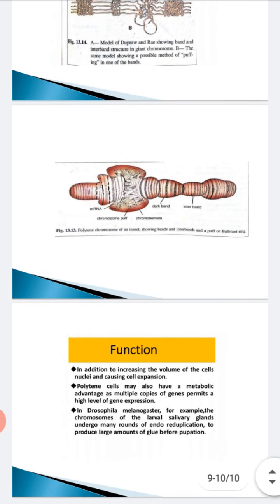What is its function? One is that it increases the volume of the cell and causes expansion of nuclei and cells. Second, polytene cells may also have a metabolic advantage as multiple copies of genes permit a high level of gene expression. In Drosophila melanogaster for example, the chromosomes of the salivary gland undergo many rounds of endo-reduplication so they can produce large amounts of glue before pupation.